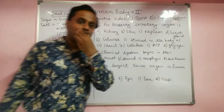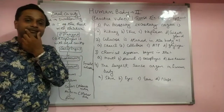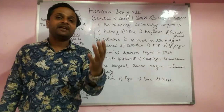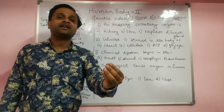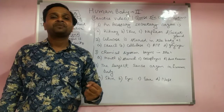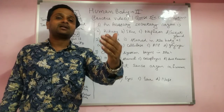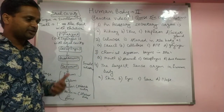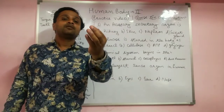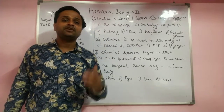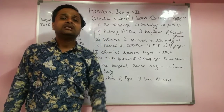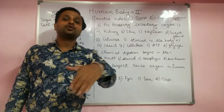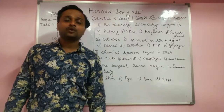First of all we have the oral cavity. In the oral cavity we have the tongue, which is used for swallowing. We have the salivary gland and salivary amylase enzyme, which converts complex sugar into simple sugar — that is starch into maltose or glucose.